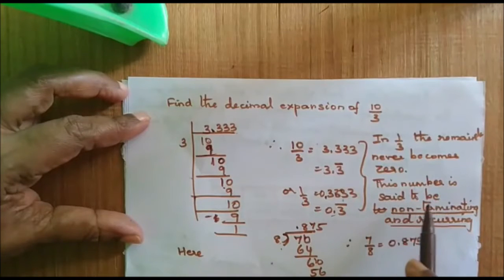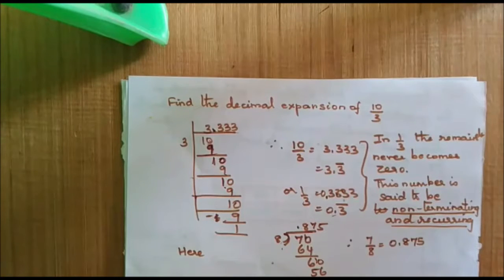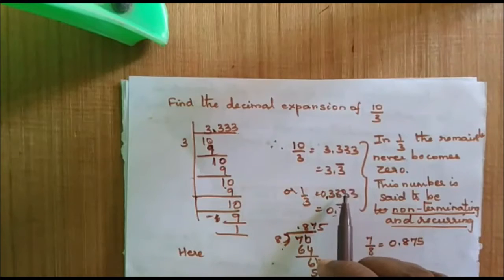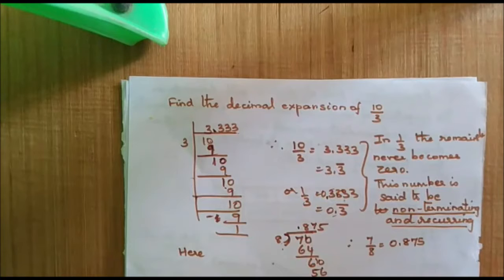Such numbers are said to be non-terminating. Non-terminating means they do not terminate, or in other words, they do not end. So they are called non-terminating and recurring. This 0.3 is continuously recurring, so such decimals are called non-terminating and recurring.